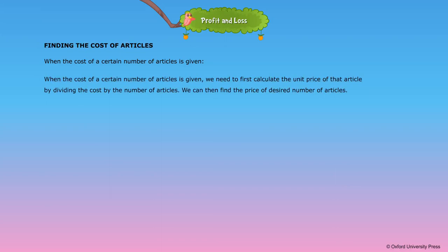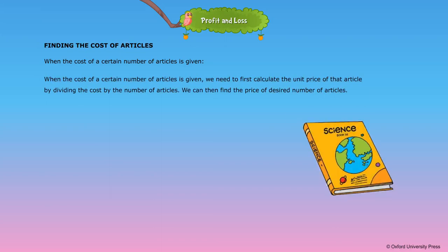When the cost of a certain number of articles is given, we need to first calculate the unit price of that article by dividing the cost by the number of articles. We can then find the price of the desired number of articles.